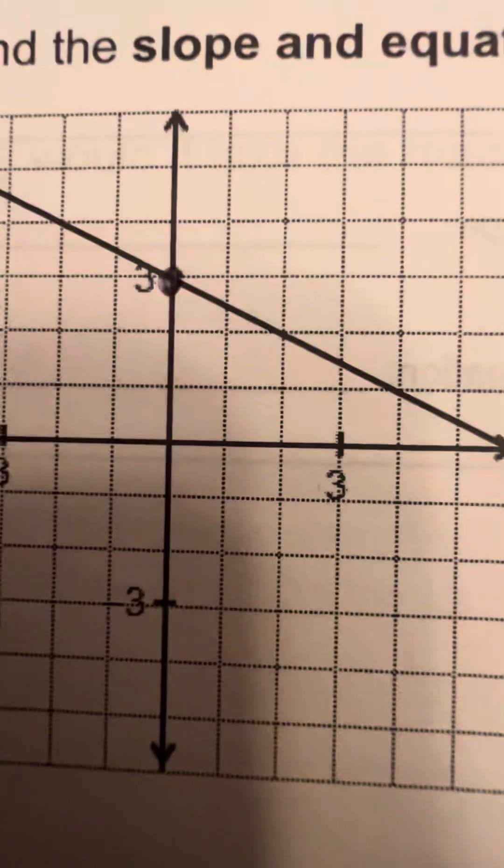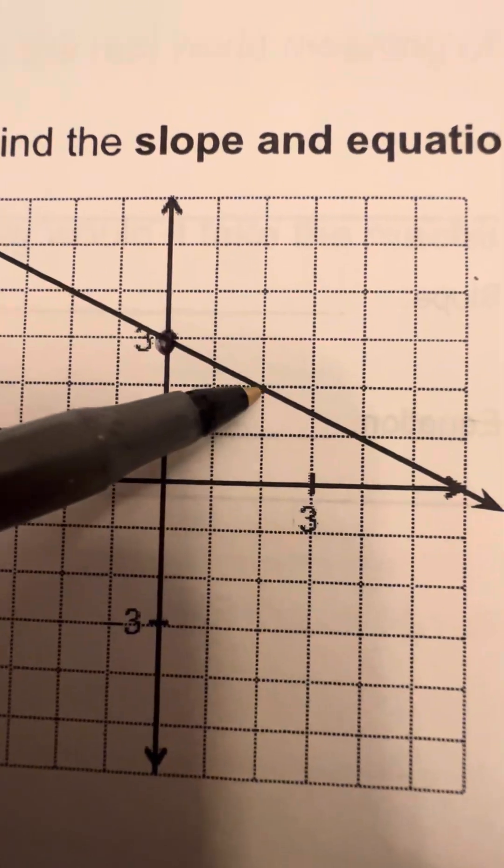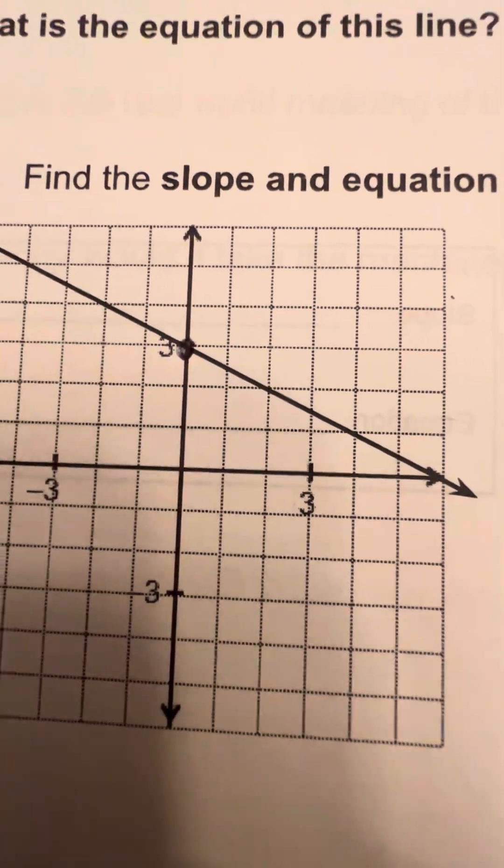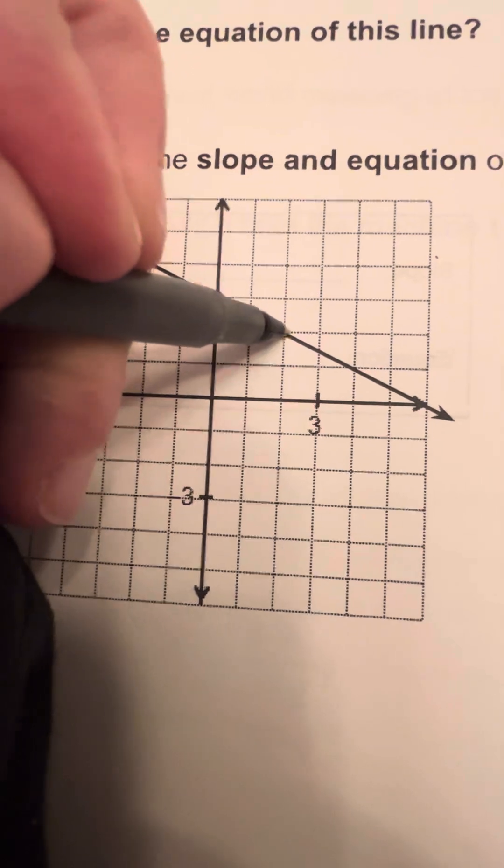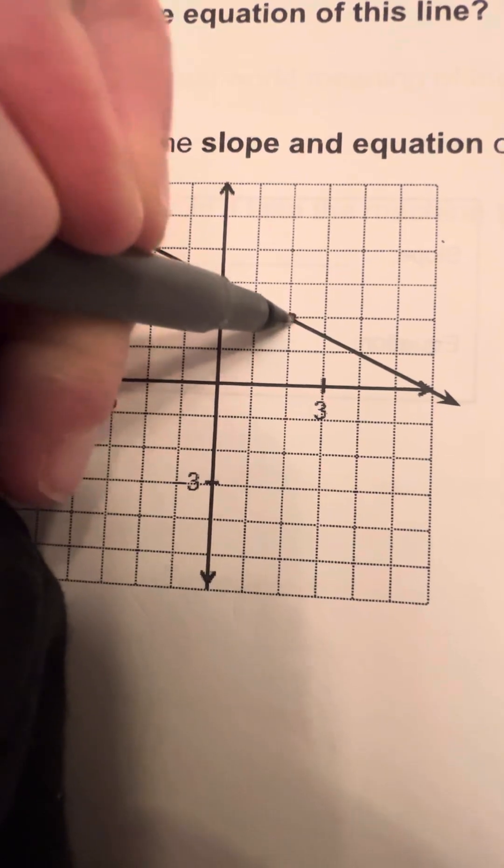So we're looking for a nice, clean set of points. You see this point right here? That's what we want to use. We don't want to use weird numbers that are in the middle of a line, because it's not going to help me.